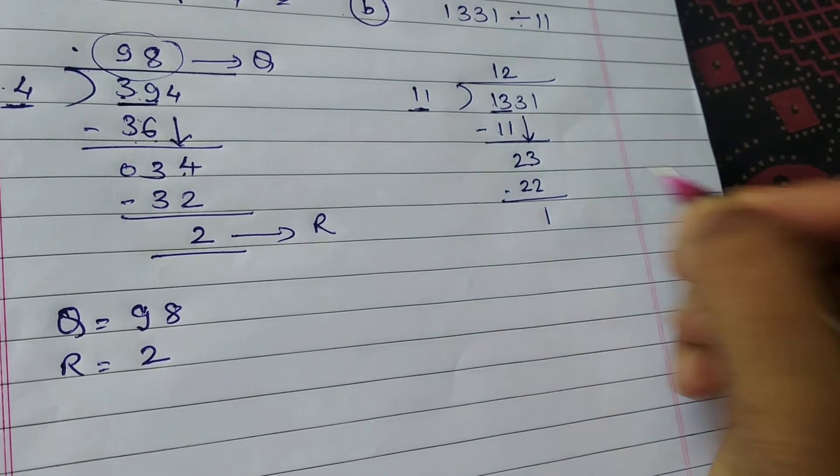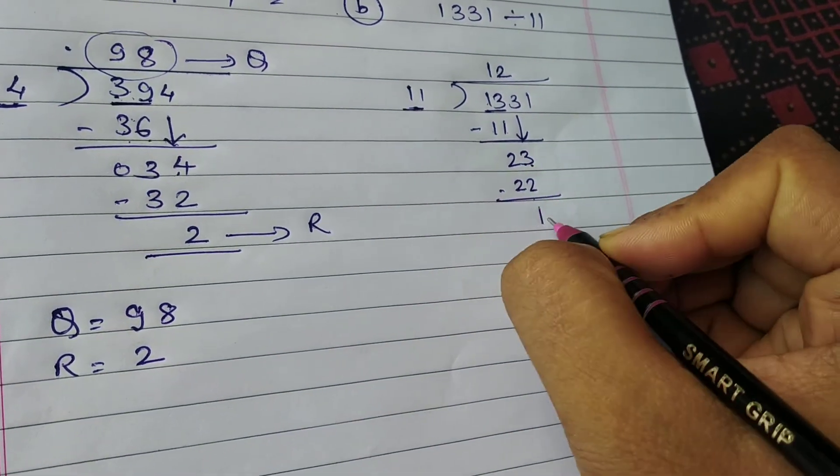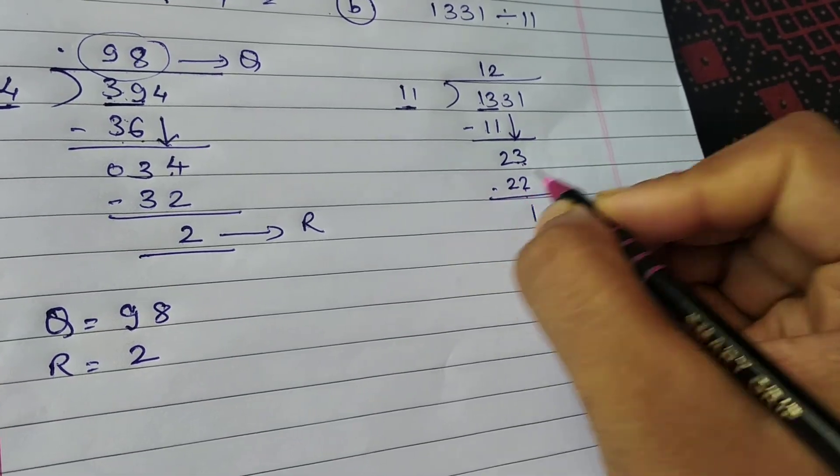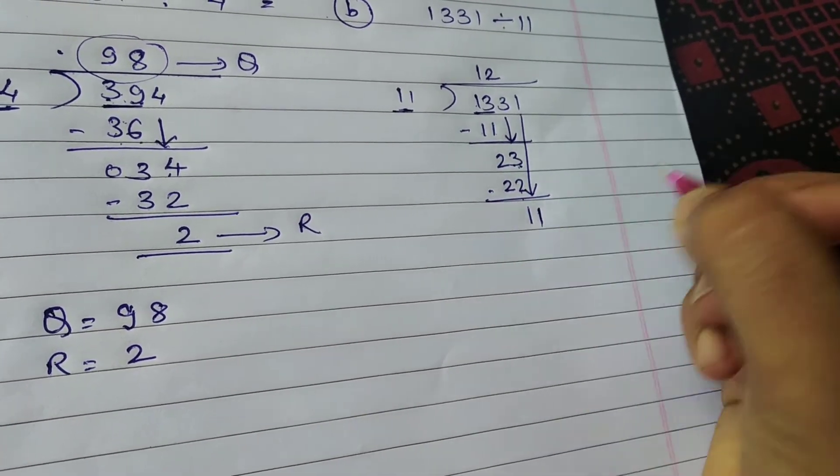Okay, now again 1. 23 minus 22 is 1. Yahan pe 3 minus 2, 1. 2 minus 2, 0. Now take the next digit down, that is 1.